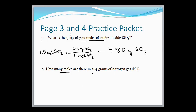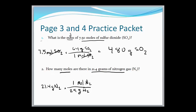Number 2: how many moles are there in 21.4 grams of nitrogen? Start with the given: 21.4 grams of nitrogen. Set up the first conversion — put grams in the denominator. According to the mole map, we can only go from grams to moles. Nitrogen has a molar mass of 14, and since there are two atoms, we have 28 grams. Grams cancel, leaving moles, and 21.4 divided by 28 gives us 0.76 moles of nitrogen.